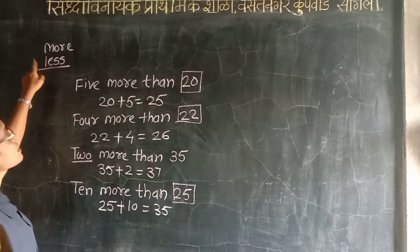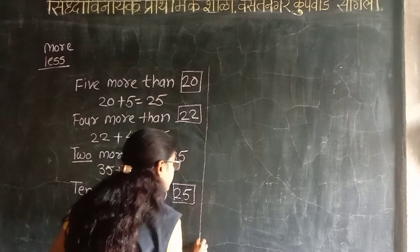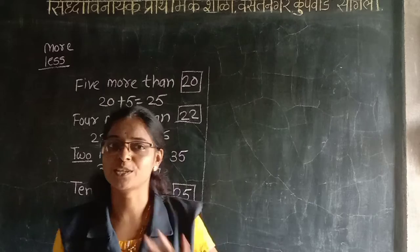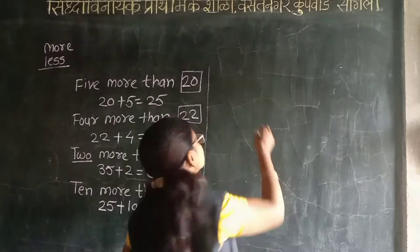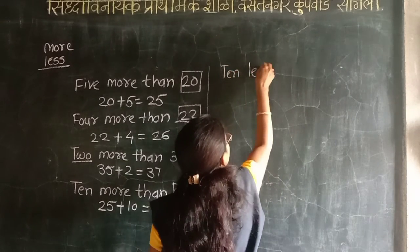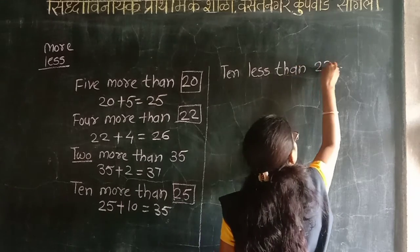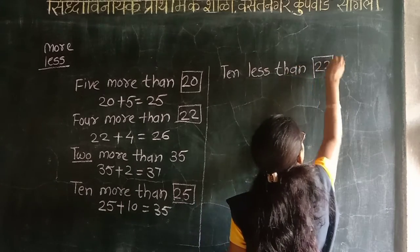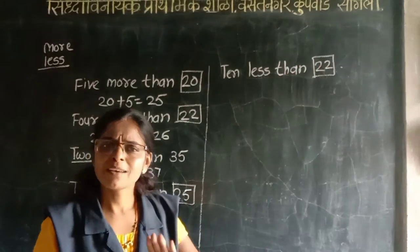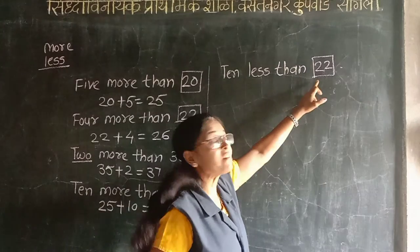More, by lose, less, kami. OK, now 10 less than 22. 10 less than 22 — less than means kami, pekshah kami.